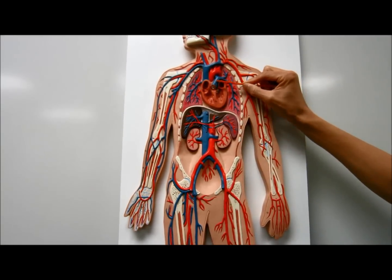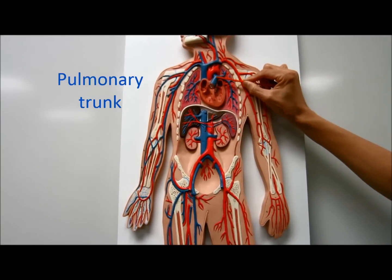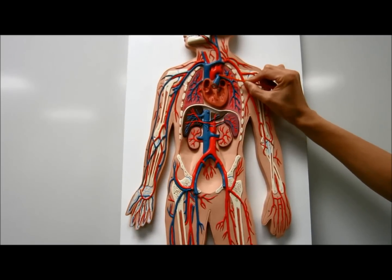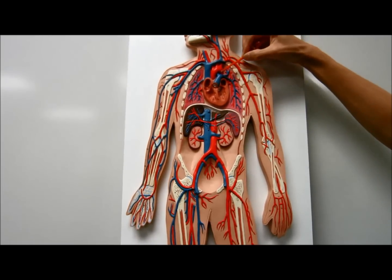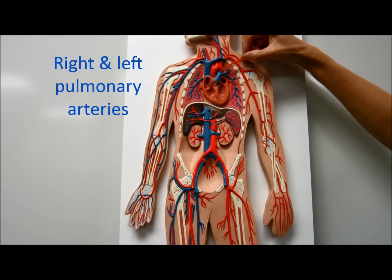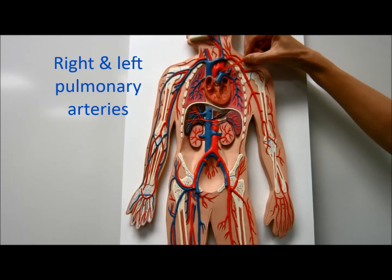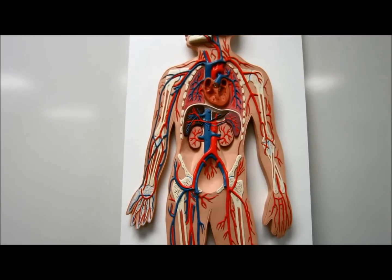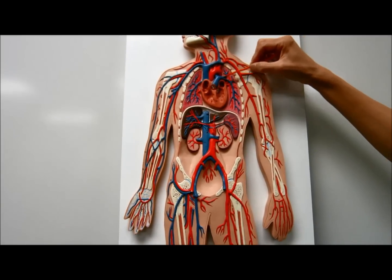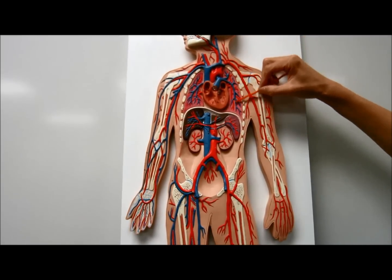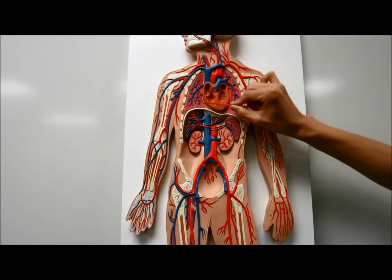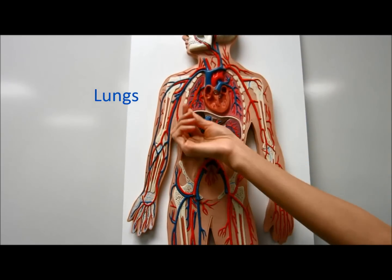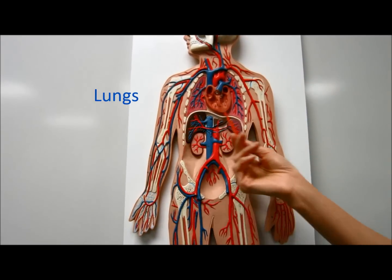This vessel here is the pulmonary trunk. The pulmonary trunk branches to form the right and the left pulmonary arteries, which make further branching into the lung.